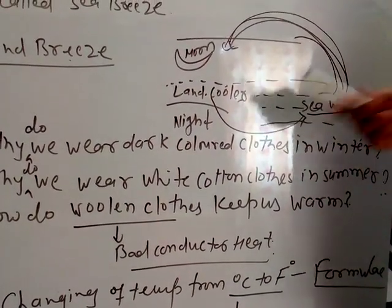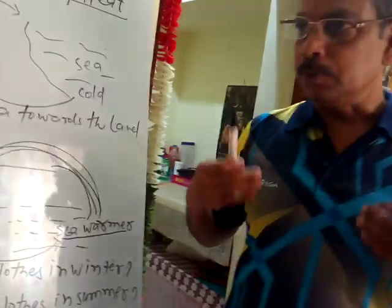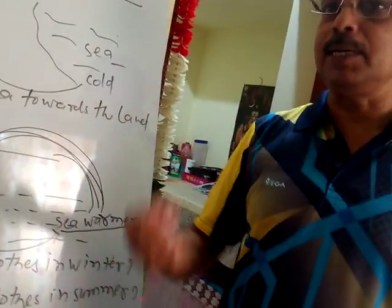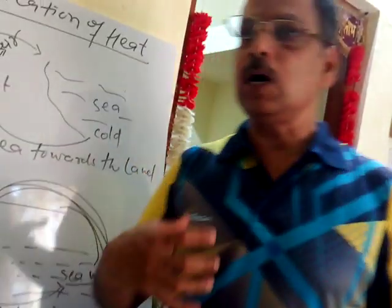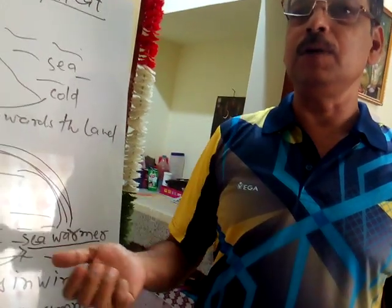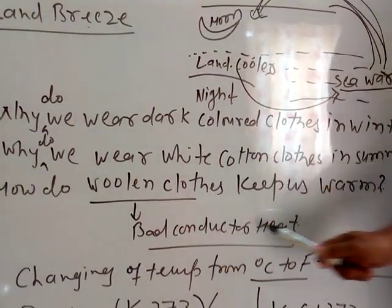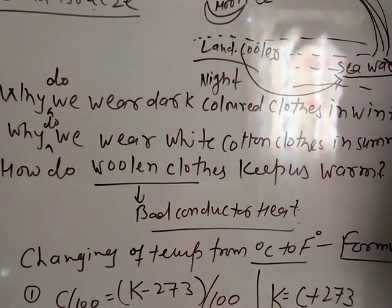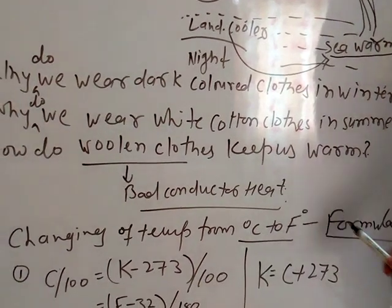Similarly, woolen clothes keep our body warm during winter because woolen clothes are insulators — bad conductors of heat. When we wear woolen clothes, the heat from our body is trapped by the air present in the gaps of the woolen fabric. Since woolen clothes are bad conductors of heat, they do not allow body heat to escape. So we remain warm when wearing woolen clothes.